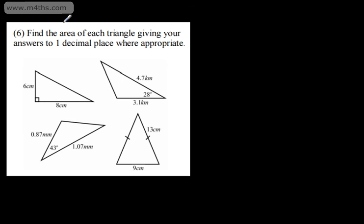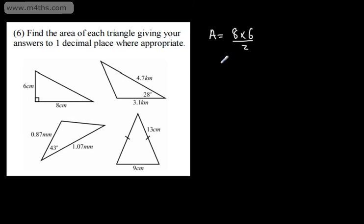In question 6, we're asked to find the area of each triangle, giving our answer to one decimal place where appropriate. This first one has sides 6 and 8 and it's a right angle triangle, so it's straightforward. The area is base times height divided by 2, which gives us 24 centimeters squared.